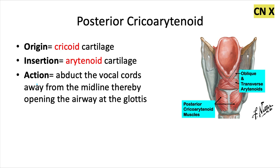Next, let's move to the larynx. We have the posterior cricoarytenoid muscle. It originates from the cricoid cartilage and inserts into the arytenoid cartilage — that's why it's called cricoarytenoid, named for its origin and insertion. The action of this muscle is to abduct the vocal cords, which means move them away from the midline, thereby opening the airway at the glottis. I remember that they abduct because these muscles down here kind of look like abs — so I remember abs and abduct.